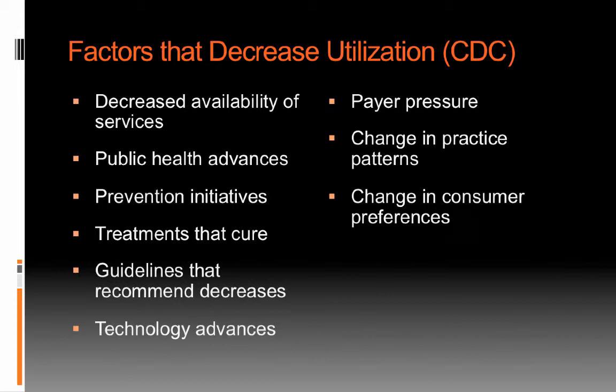There are many factors that can decrease or drive down utilization. Things like not having services available, advances in public health or prevention that suppress behaviors leading to health care needs, more effective treatments, and guidelines that create stricter criteria for elective procedures. Advances in technology that allow more efficient care delivery may decrease utilization. Payer pressure — such as increasing co-pays and insurance premiums — can be a factor. Changes in practice patterns, and changes in consumer preferences, such as consumers deciding they don't want to be medicated for certain things, may also drive down utilization.